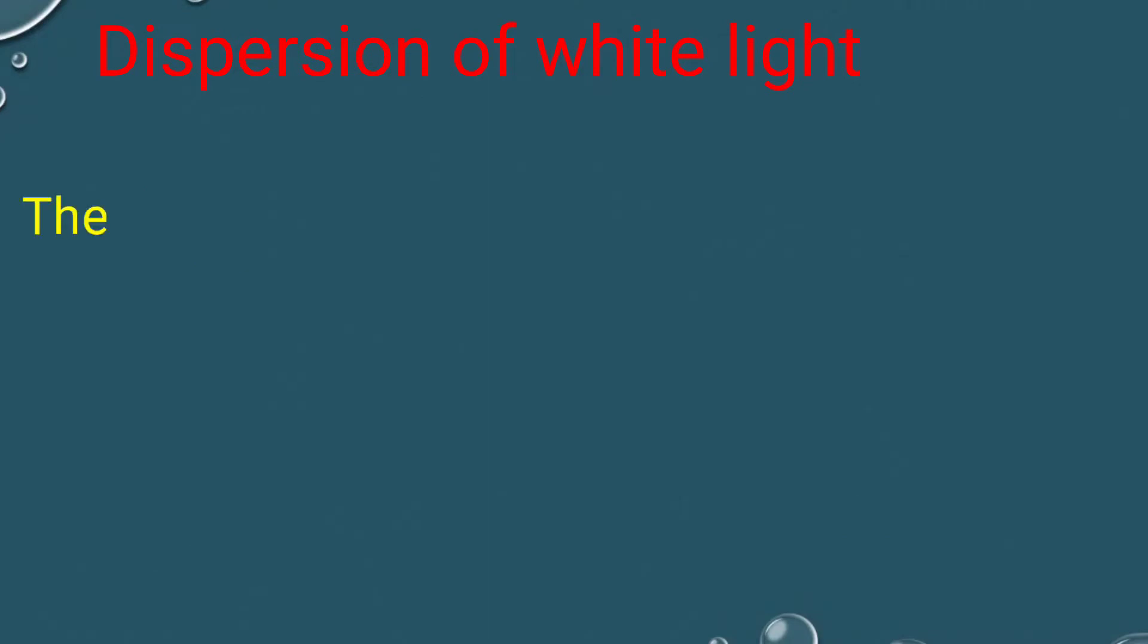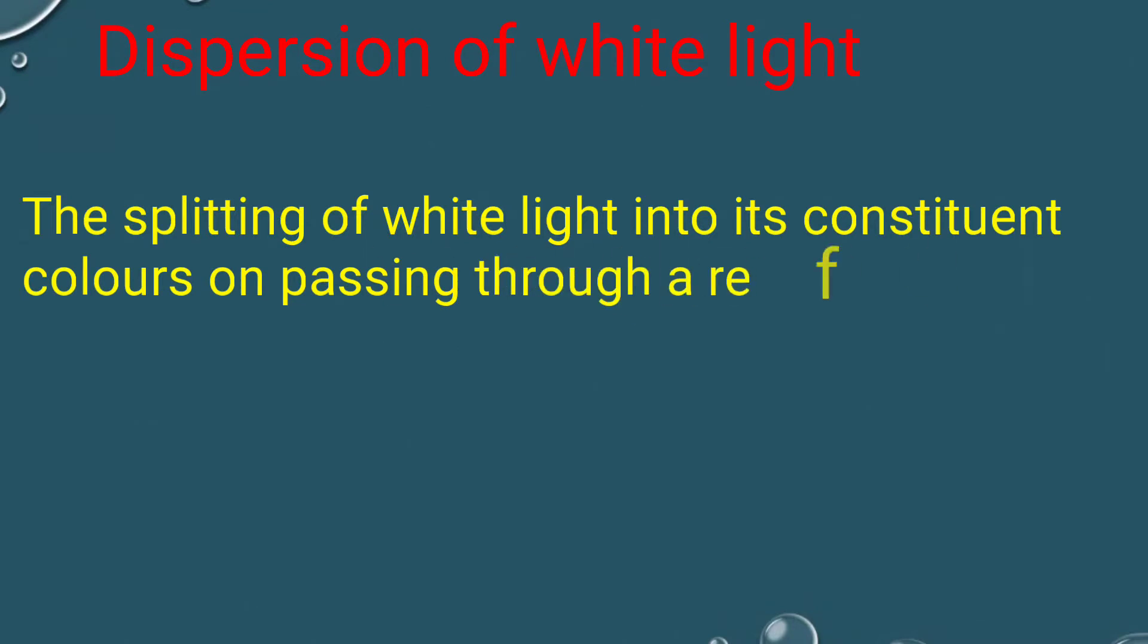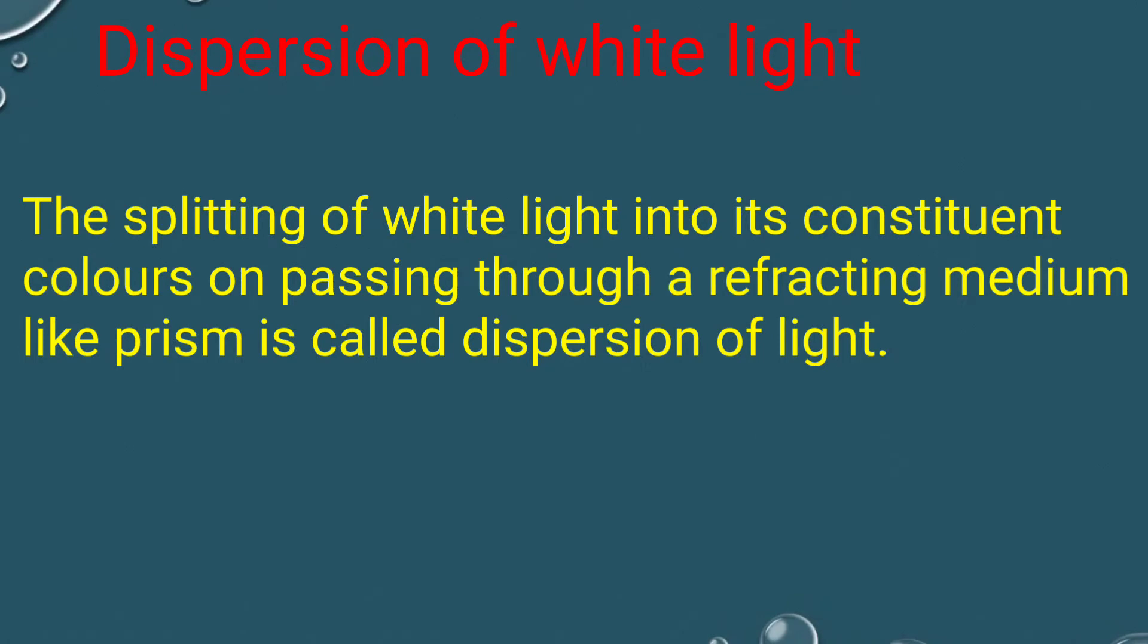Dispersion of white light. The splitting of white light into its constituent colors on passing through a refracting medium like a prism is called dispersion of light.